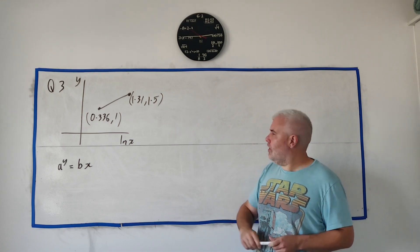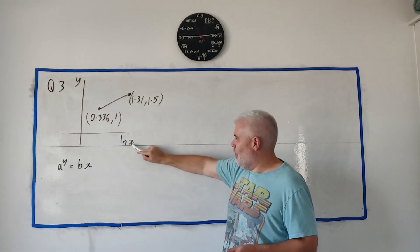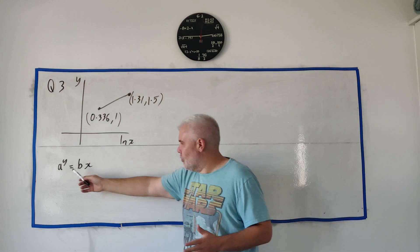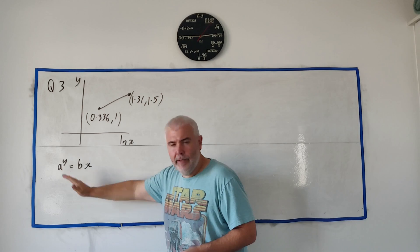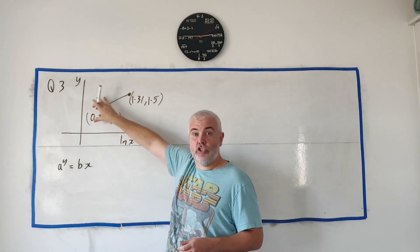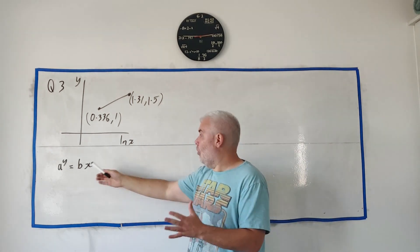In question 3, they give us this graph here of natural log x by y. Very important to notice, that's not x here. And then they also give us an equation, a to the power of y is equal to bx. Two unknowns there, a and b. And they give us some points here. They tell us this is a straight line, that's important as well. And basically, they ask us to solve a and b.